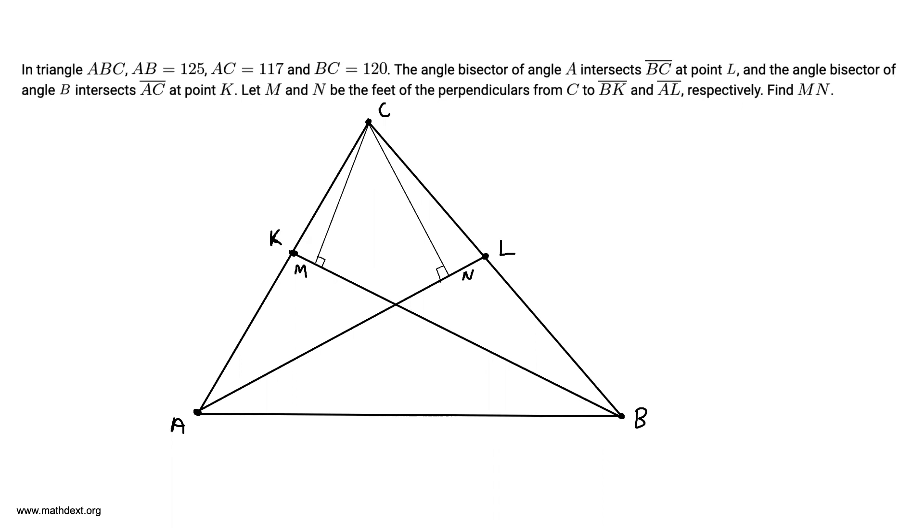Okay, so let's take a look and see what we have here. We have this rather big triangle. AB is equal to 125, BC is 120, AC is 117.